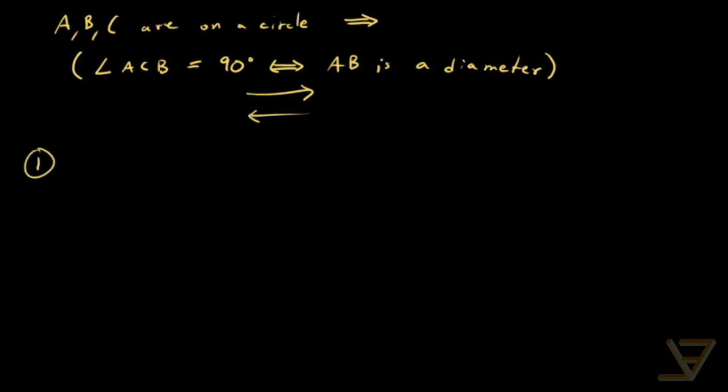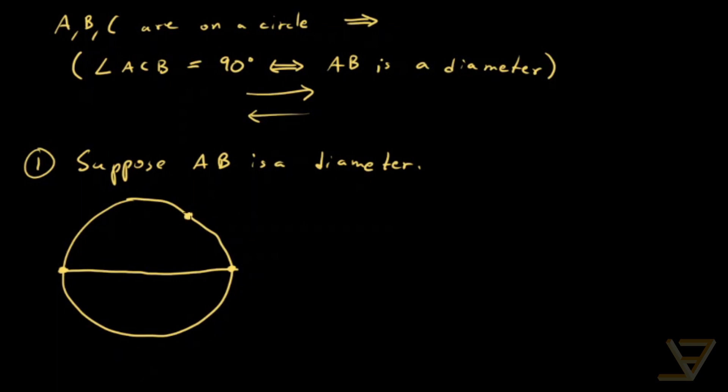So let's do the left direction first. Suppose AB is a diameter. The diagram will look something like this. We've got a diameter AB and we've got a point C up here. And we're going to be adding the midpoint of AB, which is the center of the circle O. And importantly, we're also going to be drawing this line segment from O to C.